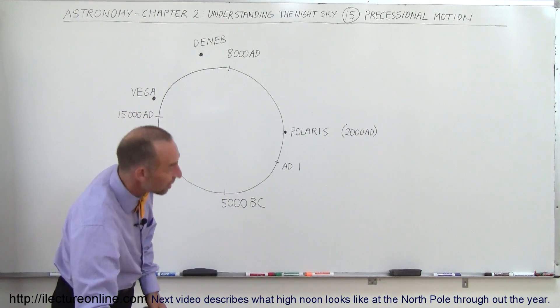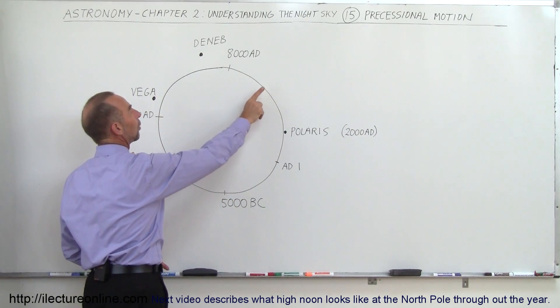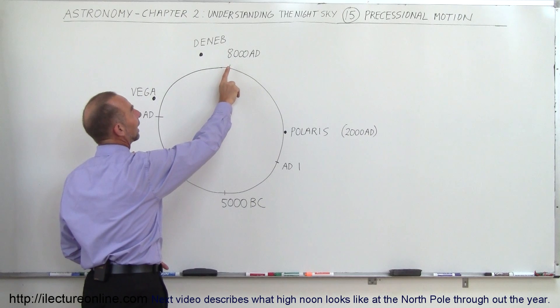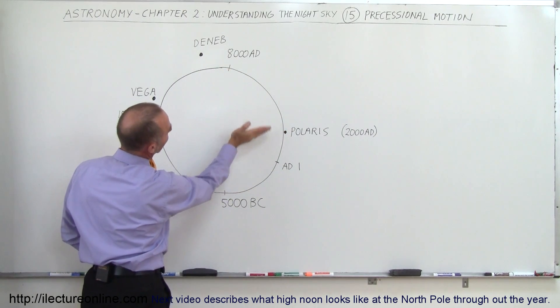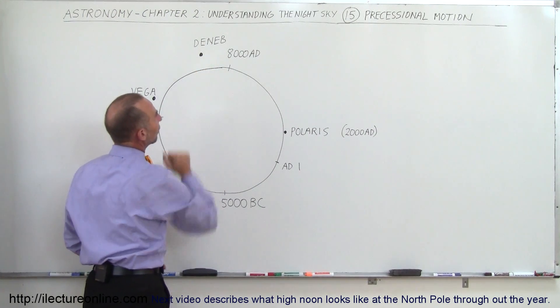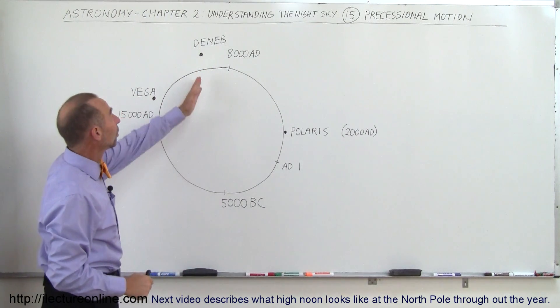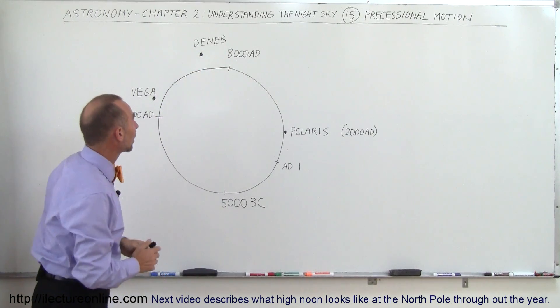But as time goes by, you'll see that the Earth's North Pole will slowly point in a different direction. More than 8,000 AD, so let's see here, this is about 8,000 years from now, when it's about 10,000 AD, we'll be pointing directly at Deneb. That'll be about 2,000 years later than this location right there.